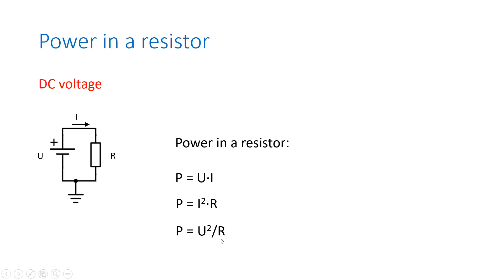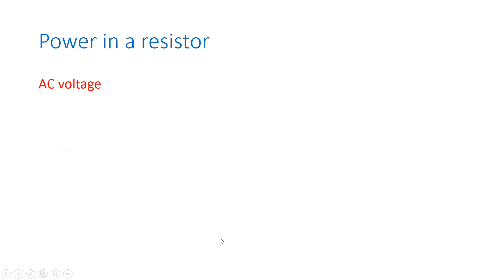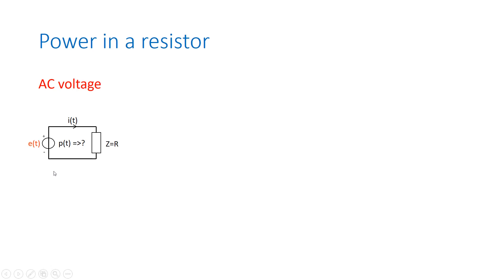That's the DC situation. Now let's look at the situation in which we have an AC voltage. We have a situation depicted over here in which we have an AC voltage source, and we again connected a resistor. So this impedance is a pure resistor.